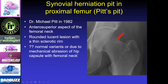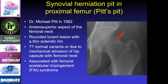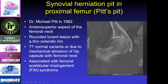Pitt's pit is believed to be due to normal variation of the hip capsule against the femoral neck, and it has an associated femoral acetabular impingement. Here's a Pitt's pit on CT — we can see again it's in the classic location in the anterior aspect of the femoral neck, with a lucent center and a thin sclerotic rim.